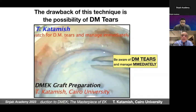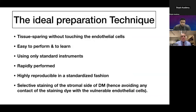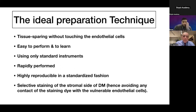Starting the dissection from the periphery allows us to deal with peripheral tears before they extend centrally. The ideal preparation technique should be tissue-sparing without touching the endothelial cells, easy to perform and learn, using only standard instruments, rapidly performed, and highly reproducible. Another important criterion is selective staining of the stromal side of the Descemet membrane, avoiding any contact of the staining dye with the vulnerable endothelial cells.